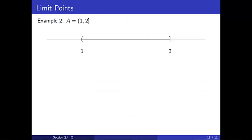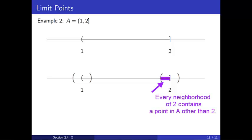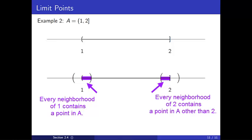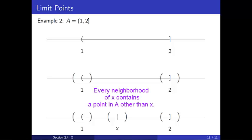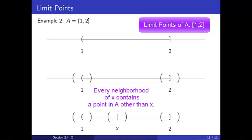In our second example, A was the interval from 1 to 2, including 2. Notice that any neighborhood around 2 will contain a point in A other than 2. The same is also true of 1 — even though 1 isn't in the set, any neighborhood around 1 will contain a point of A. Therefore 1 is a limit point. Finally, if we pick any point x in A, every neighborhood around x will contain a point in A other than x. So our limit points are the closed interval from 1 to 2.